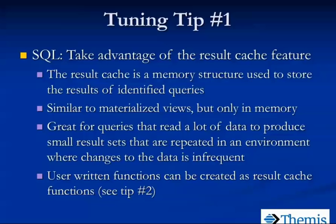Tuning tip number one — and these aren't necessarily in any particular order of importance. Tip one is an SQL tip: take advantage of the result cache feature. A lot of people aren't aware of the result cache — it's been around since Oracle 11g. The result cache is kind of like a materialized view. It's a memory structure that stores results of queries in memory. Typically in Oracle, by default, the raw data that queries are accessing is stored in memory in the buffer cache.